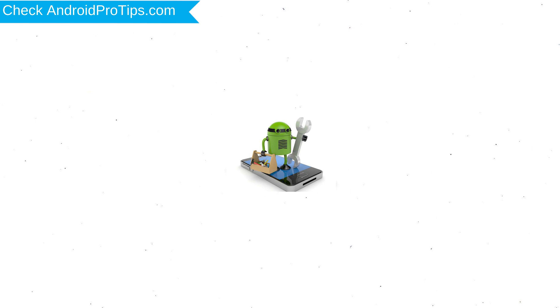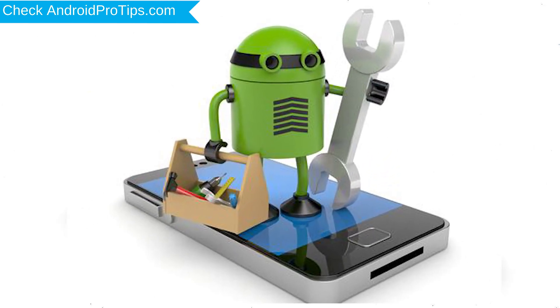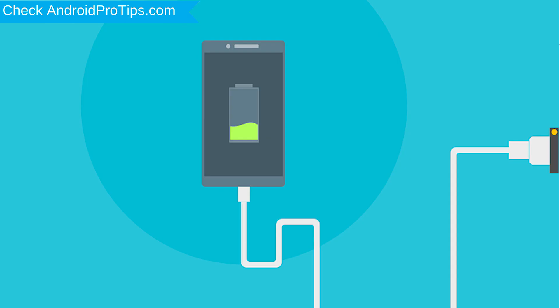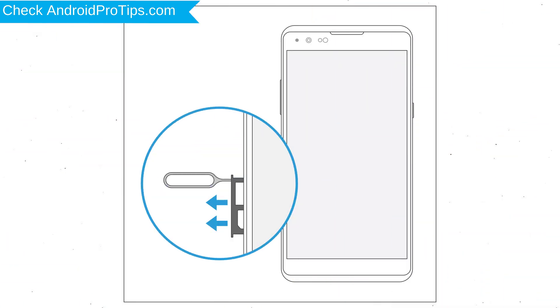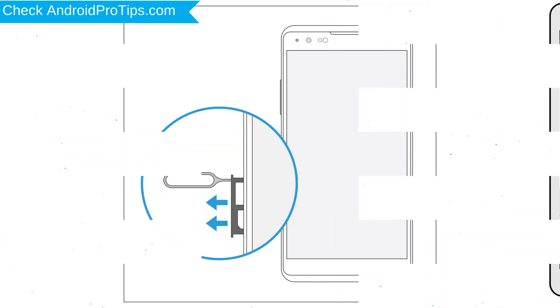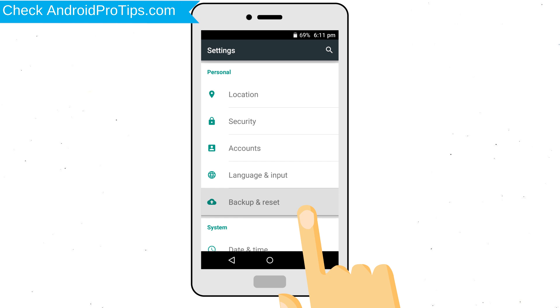Before resetting your mobile, your mobile battery must be above 50%. Remove SD cards and SIMs. Back up your Android mobile data if possible.